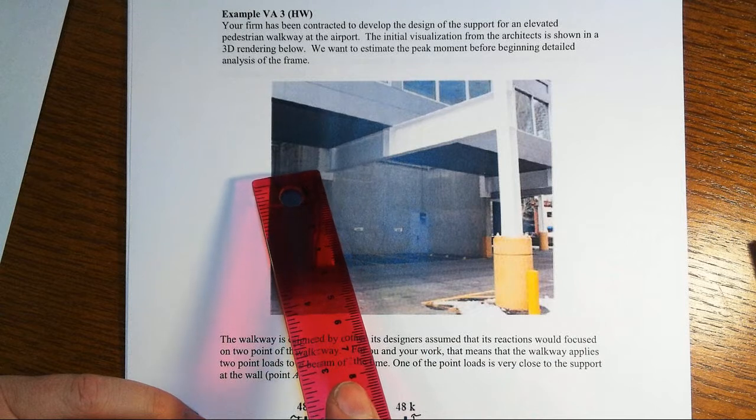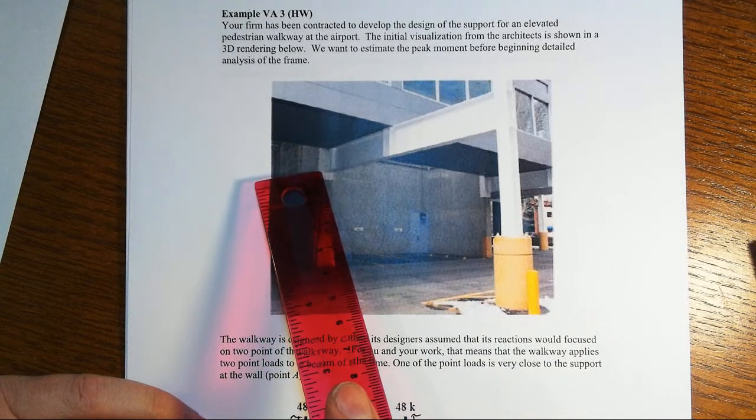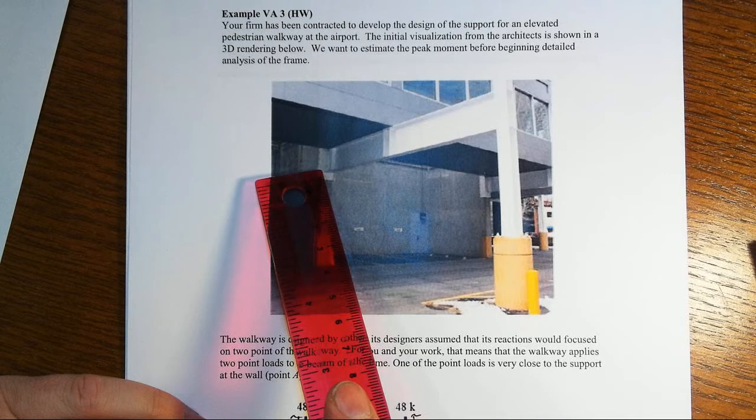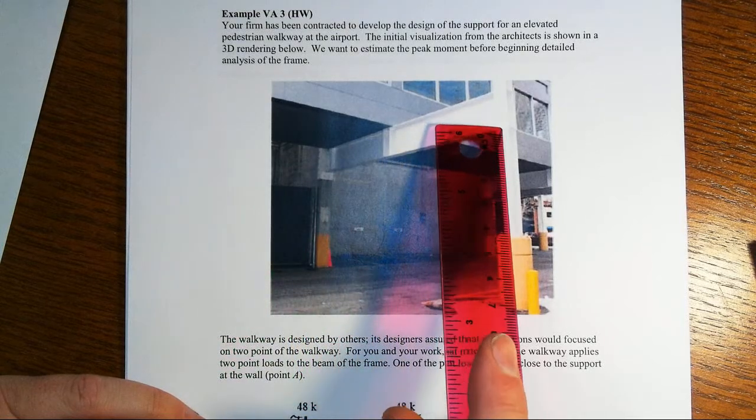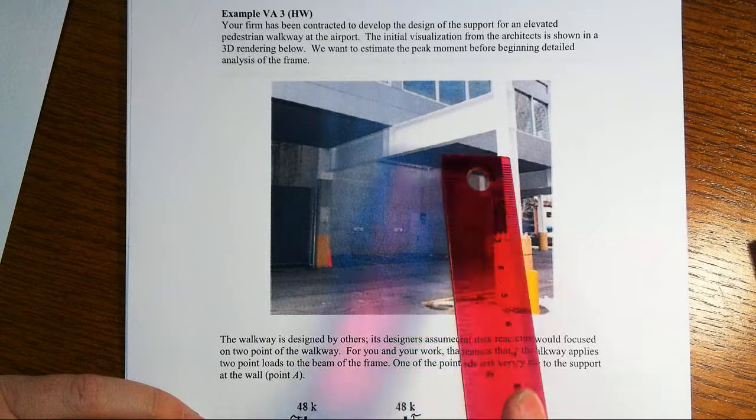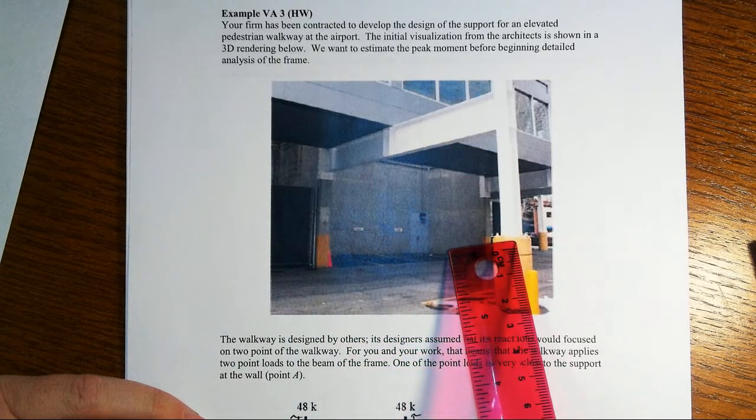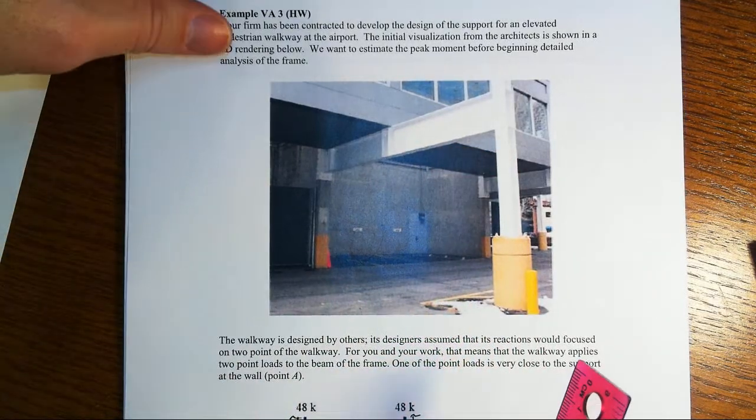And that is a fully rigid connection, meaning transfer of moment and shear and axial force. And then we have a rigid connection and joint between the beam to the column. The column is fixed rigidly to the support below.